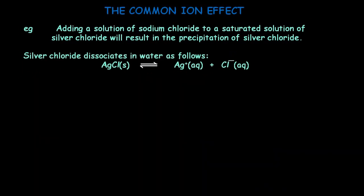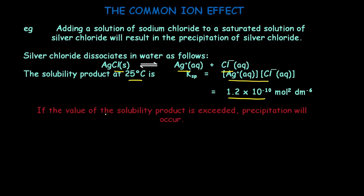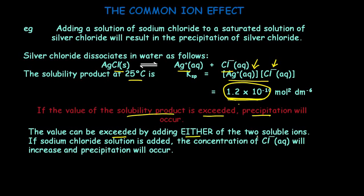Let's understand this with some calculation. Silver chloride dissociates in water as shown. Writing the expression for Ksp at 25°C gives the product of the silver ion and chloride ion concentrations. The Ksp for silver chloride is 1.2 × 10⁻¹⁰ mol² dm⁻⁶. If the solubility product exceeds this value, precipitation will occur. That is, if we increase the concentration of either ion, the product will exceed Ksp, resulting in precipitation. Adding sodium chloride solution increases the Cl⁻ concentration to exceed this value.